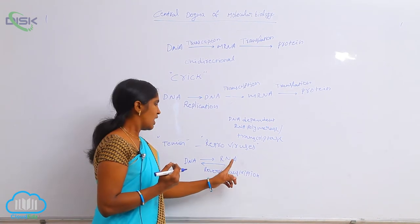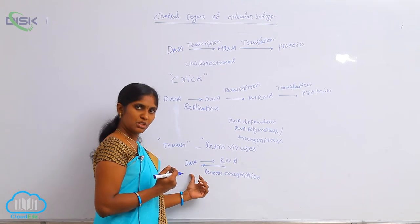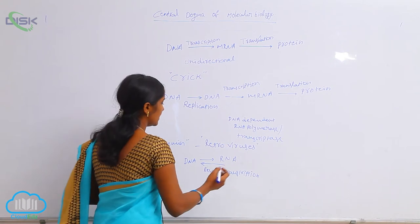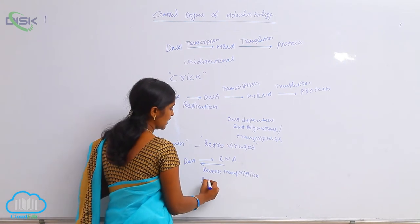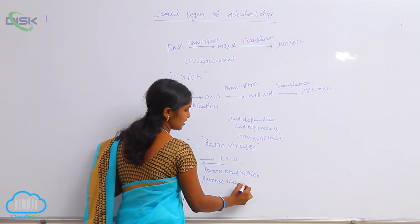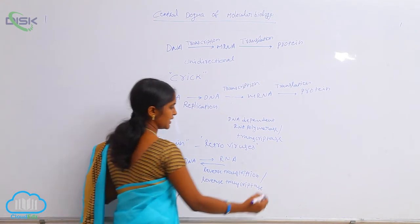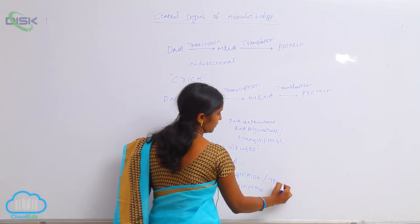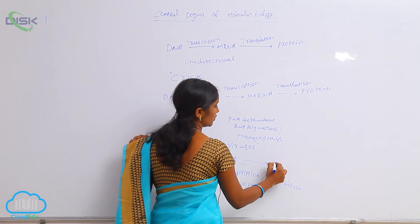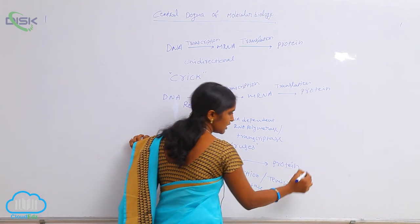In retroviruses, RNA to DNA production occurs — the genetic information passes from RNA to DNA. That is called reverse transcription, and the enzyme involved is reverse transcriptase. This phenomenon is also called terminism. mRNA to protein also occurs here. This is the only exception.